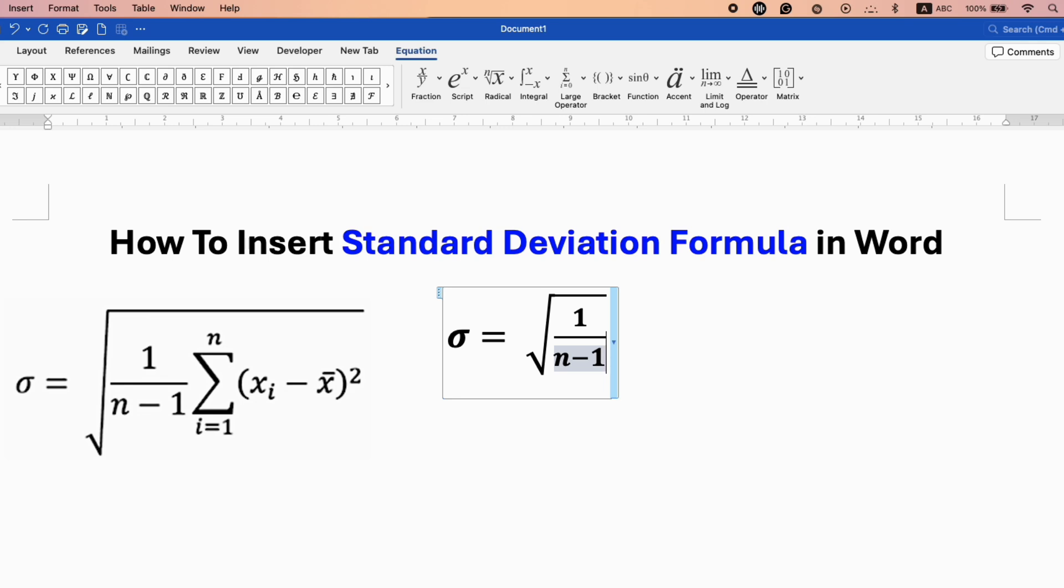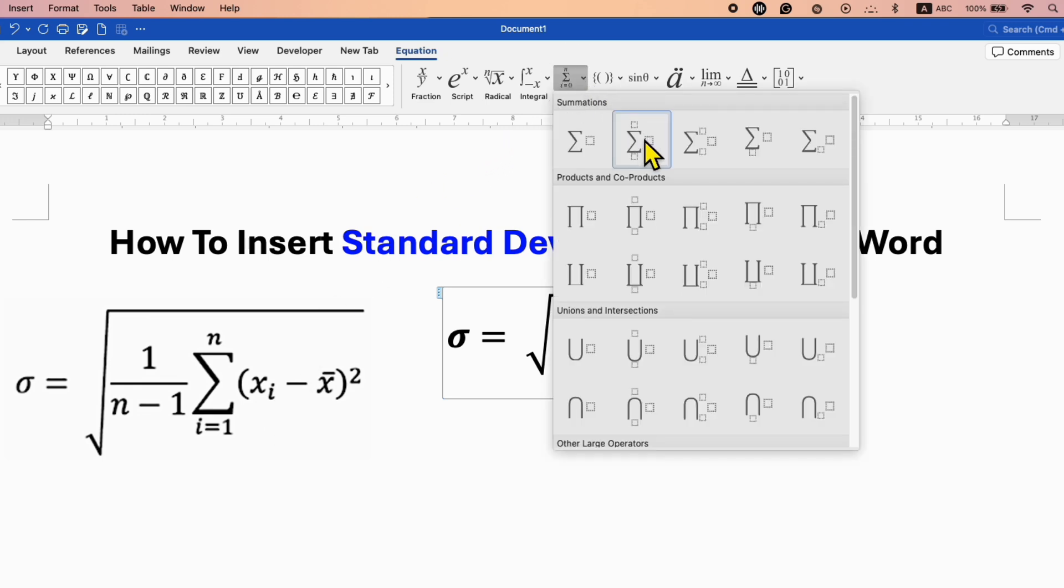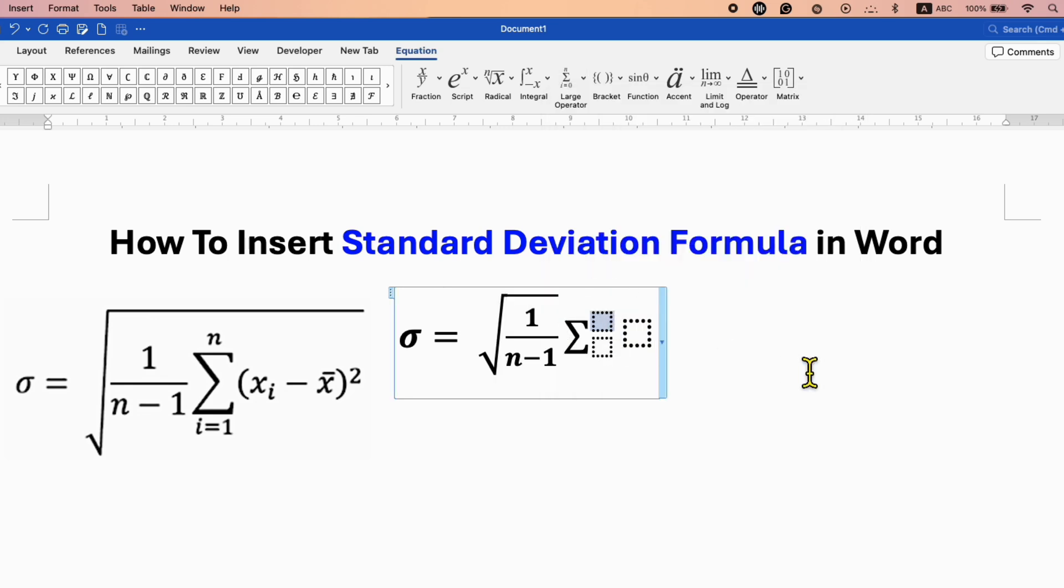Now press forward arrow key on your keyboard, or you can simply click using your mouse like this. And for the summation symbol, you will need to click on the large operator option and then select summation with limit. Now you can type n and i equal to 1.